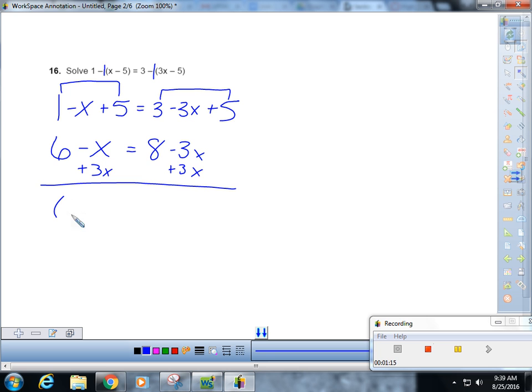I'm going to add 3x to both sides to keep my x's positive. And because I'm a positive guy, that gives you 6 plus 2x equals 8. Subtract 6. 2x equals 2. So x equals 1, okay?